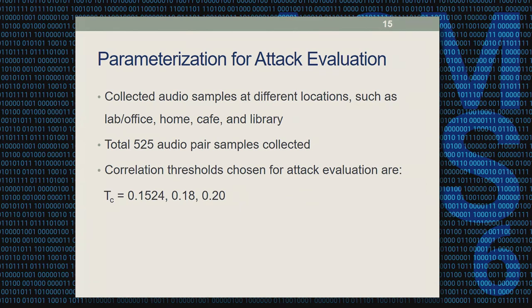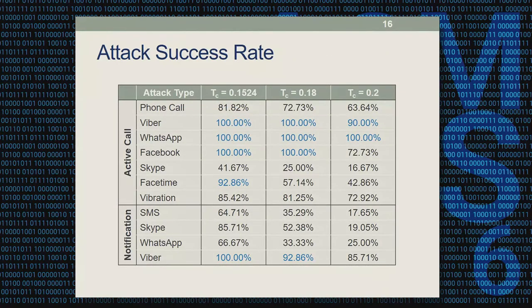To evaluate our attack against our implementation of SoundProof, we collected 525 audio samples from different locations — lab, office, home, cafe, and library — and set the correlation threshold at 0.15, 0.18, and 0.20. This table shows the success rate of different attack types against the correlation algorithm implemented in SoundProof, and most attacks were highly successful. Numbers highlighted in blue represent attacks with a success rate above 90%, and even with an increased correlation threshold, we remained fairly successful.